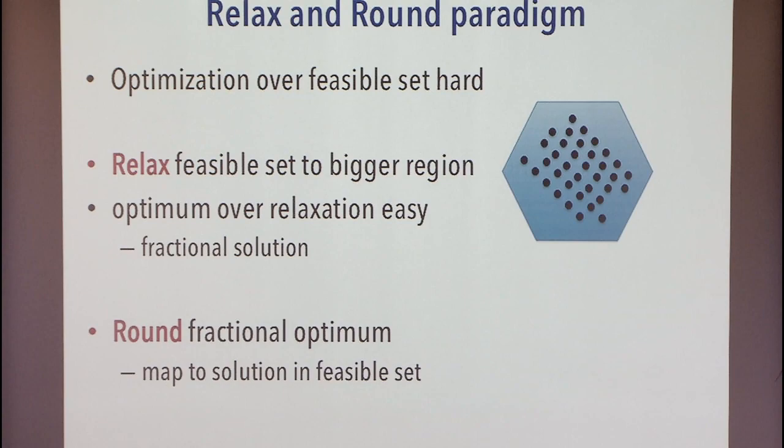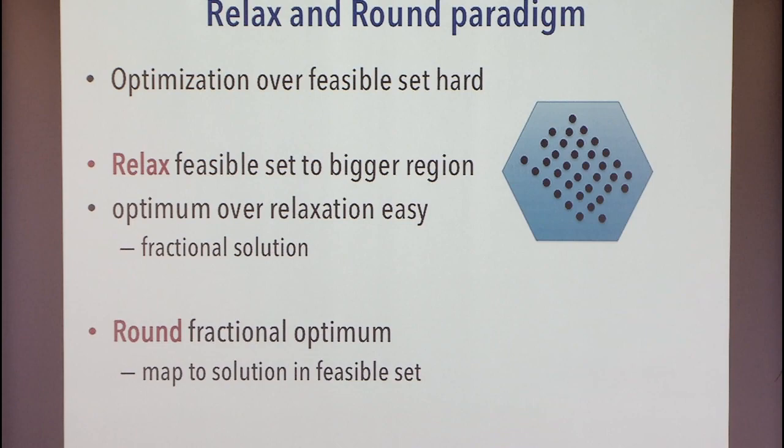But this is not what we wanted — we actually wanted to solve the problem on the original set of points. So somehow we take this fractional optimum and map it to a solution in the feasible set. We first relax, solve on the relaxation, and then we round. This paradigm has been used a lot to design approximation algorithms in particular. It's very, very popular.